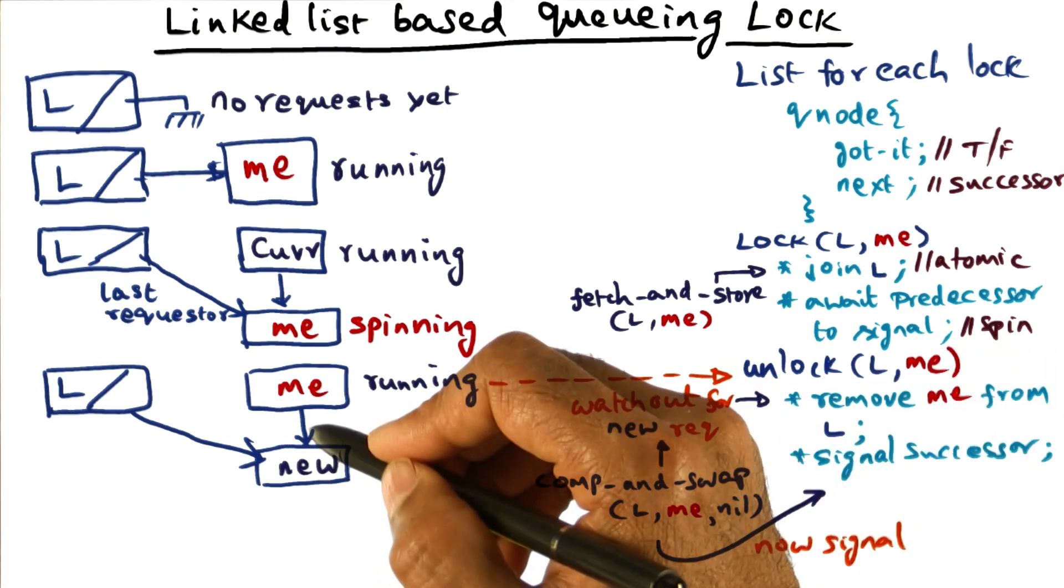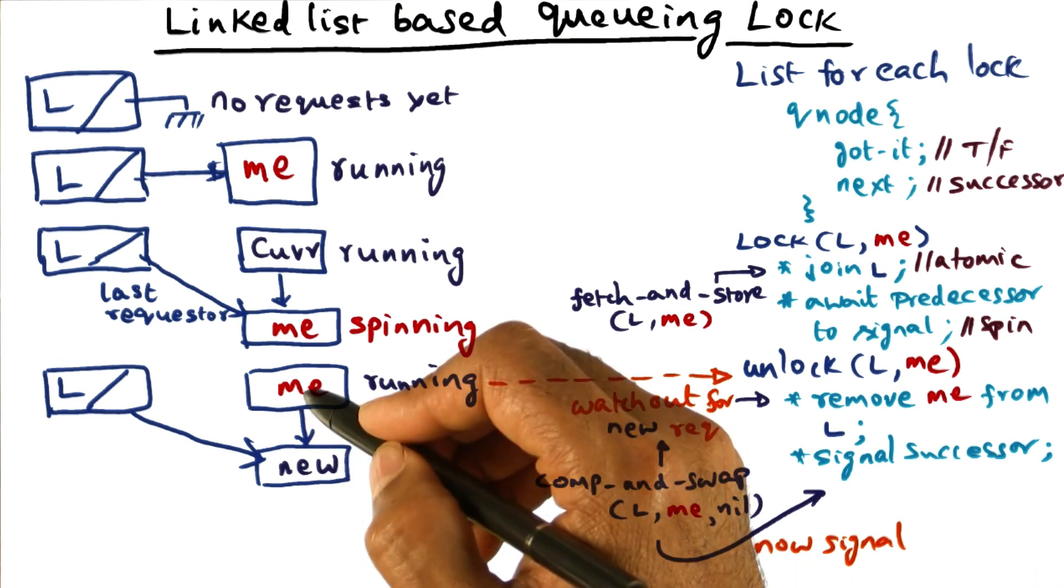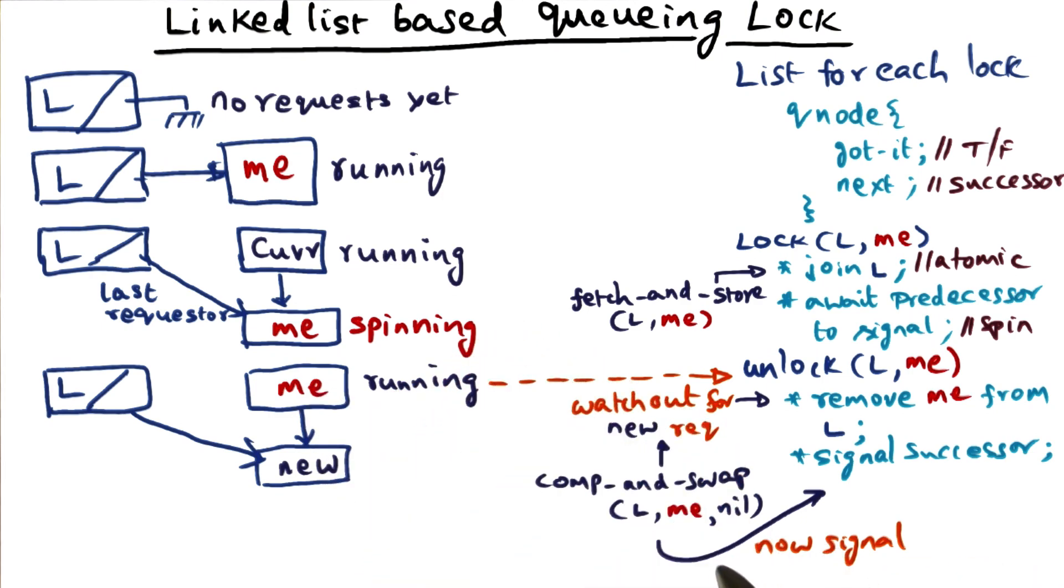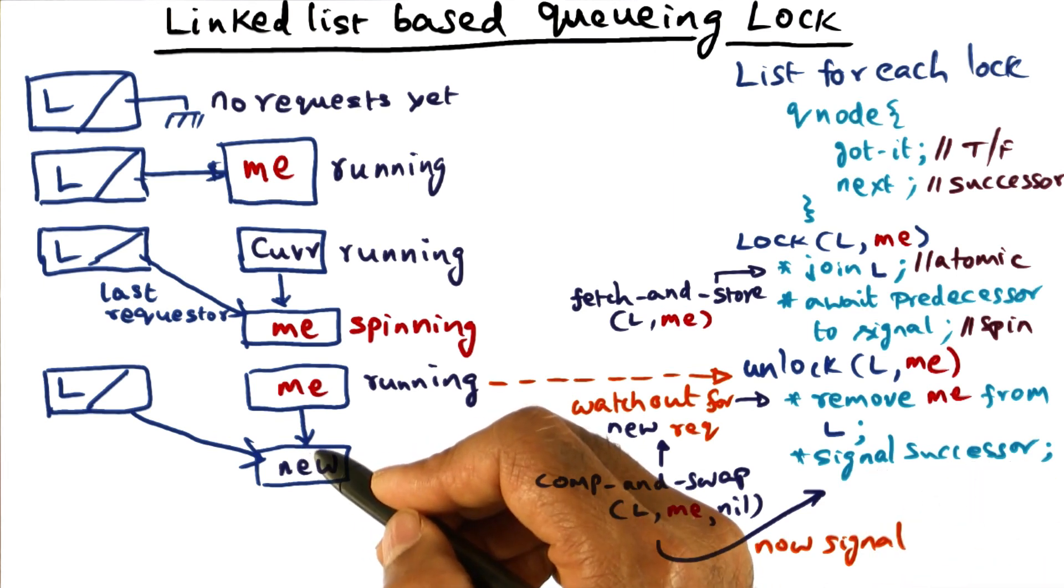And so eventually the next pointer in my node will point to him, and at that point I can come out of my spin loop. Now I'm ready to signal the successor that, hey, you've got the lock.